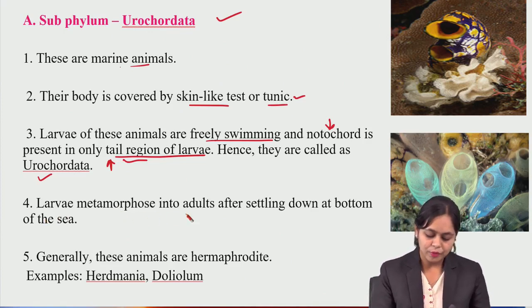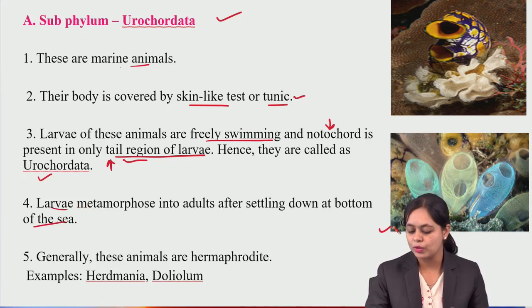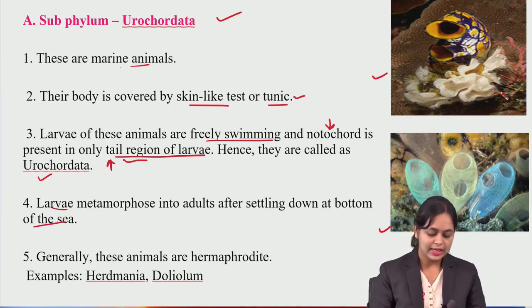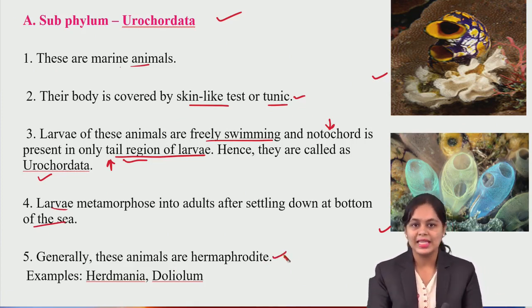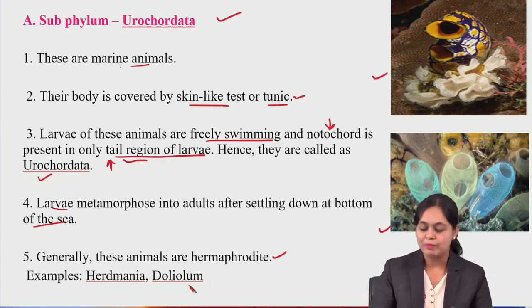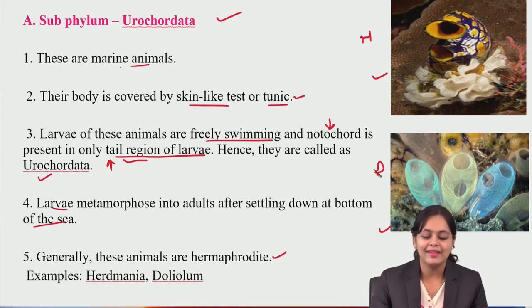Larvae mature into adults after settling down at the bottom of the sea. Adult urochordates are found at the bottom of the sea. Generally, these animals are hermaphrodites — meaning both male and female organs are present in the same animal.